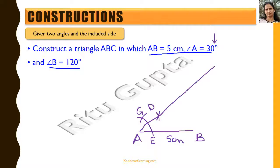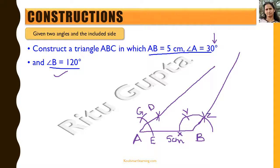At point B, we need to draw 120 degrees. We draw a semicircle with B as center. Where the semicircle intersects AB we call X. With X as center and same radius, we mark point Y, then with Y as center we mark point Z on the semicircle, giving 120 degrees. We join B and Z and extend it. The two extended lines from A and B meet at point C, giving the required triangle.